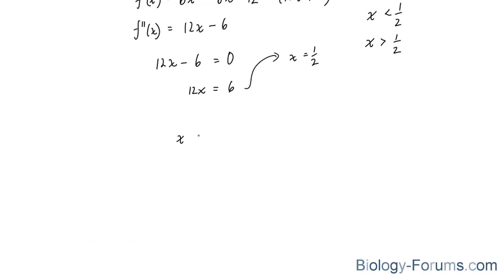So when x is less than half, let's substitute any arbitrary value for x that's less than half, let's say 0. So 12 times 0 minus 6, we get negative 6. And since it's negative, according to this test, this part will be concave down. In other words, it will be concave down from negative infinity to half.